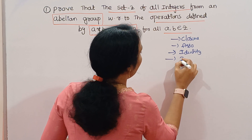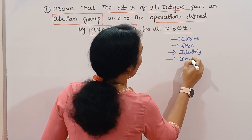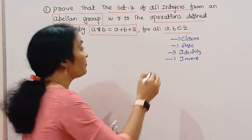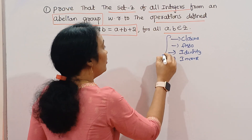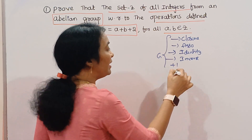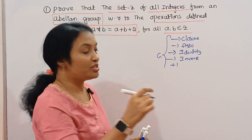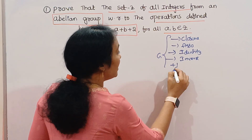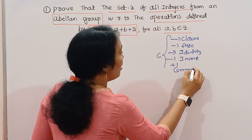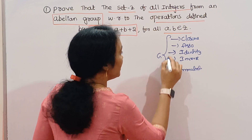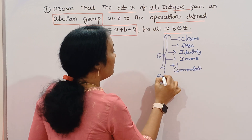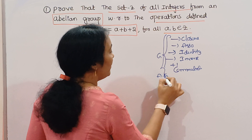It satisfies inverse. If we satisfy these four properties, we have a group. In addition, there is an extra condition — commutative. If commutative is also satisfied along with these four properties, we have an abelian group.